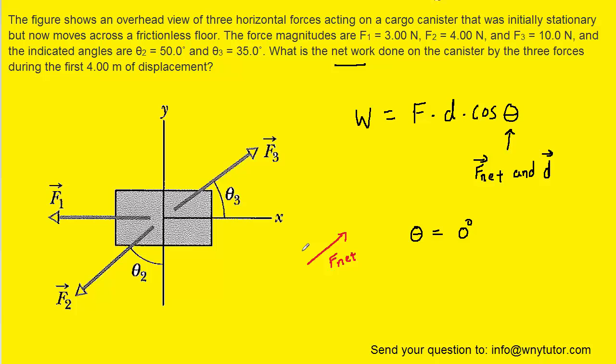And if the canister moves in the same direction as the net force, then hopefully we can see that the angle between its displacement vector and the net force vector is indeed zero degrees. Now, the cosine of zero degrees is just one, so we can actually simplify our work equation.